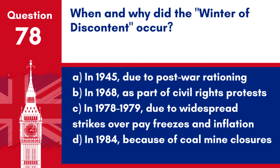Question 78. When and why did the Winter of Discontent occur? a. In 1945, due to post-war rationing. b. In 1968, as part of civil rights protests. c. In 1978–1979, due to widespread strikes, pay freezes and inflation. d. In 1984, because of coal mine closures.